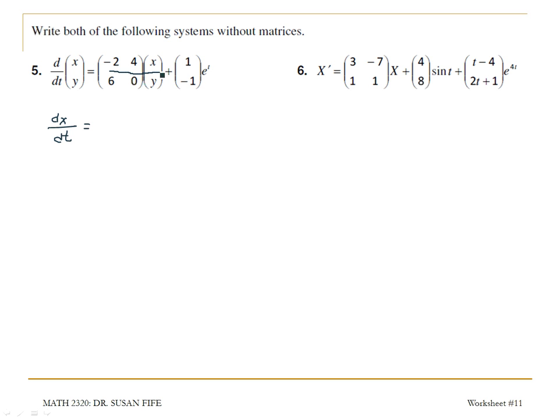this is going to give me -2x, and that 4 gets multiplied by the y, plus 4y, plus e^t.